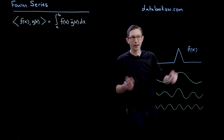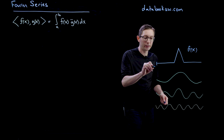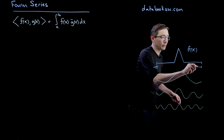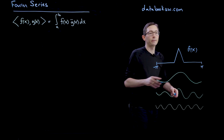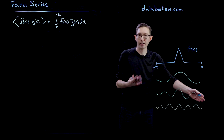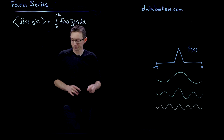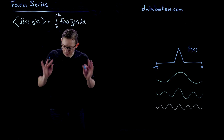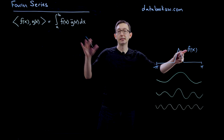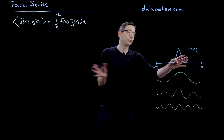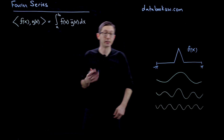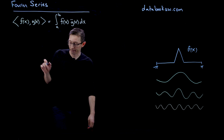So this is my function f of x. Let's say it's currently defined from negative pi to pi, so I'm going to define something that's 2 pi periodic — these 2 pi periodic sine and cosine waves. And I'm going to write down the Fourier series and derive how you can approximate f of x using these sines and cosines.